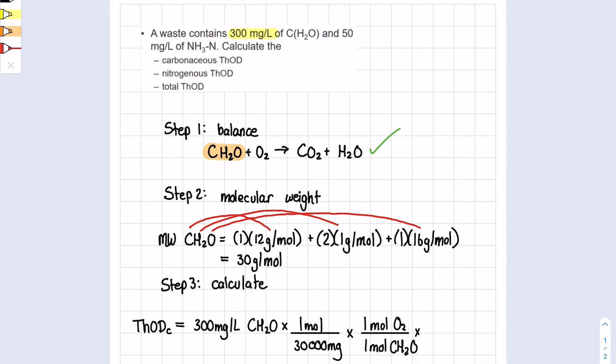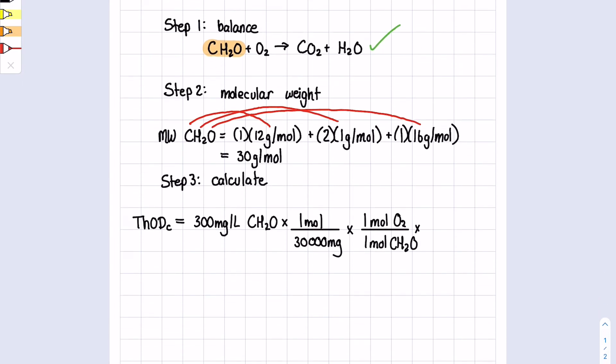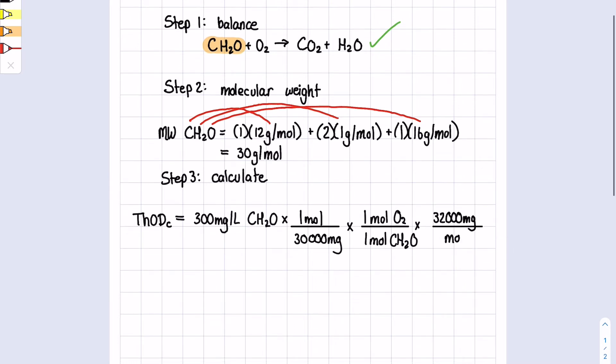For O2, that's 16 plus 16 times 2, which is 32 grams per mole, but we'll use 32,000 milligrams per mole. Notice that this one is for CH2O and this one is for oxygen, so these cancel out, CH2O cancels out.